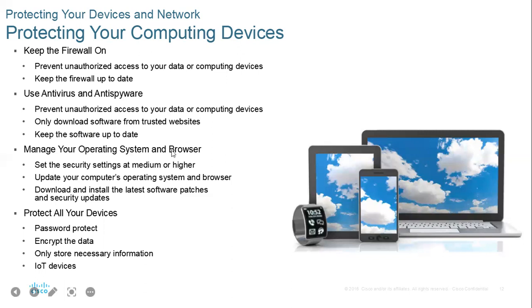Another thing is your operating system and your browser. Ask yourself why you need to update your browsers and operating system — because there are vulnerabilities and patches that need to be done. Make sure it's up to date. Then protect all of your devices, either by passwording them or encrypting the data in them. Hard drives these days, on your PC or whatever machine you use, can be encrypted. Only store necessary information — only store what needs to be stored.